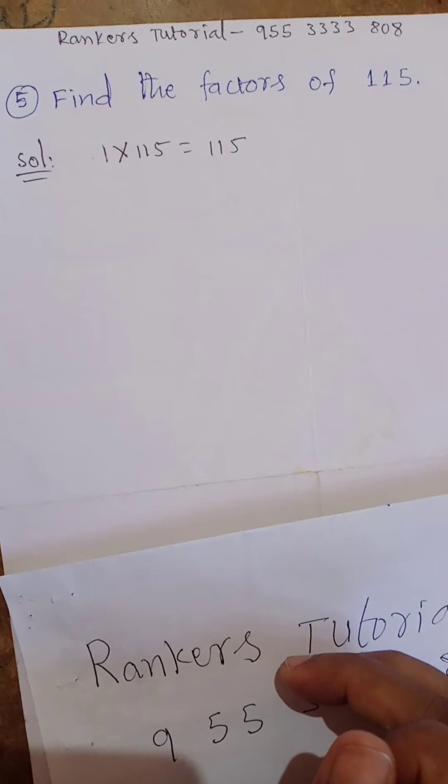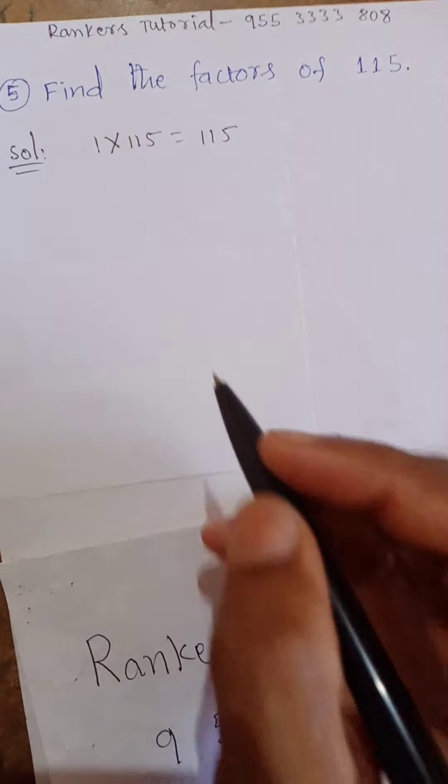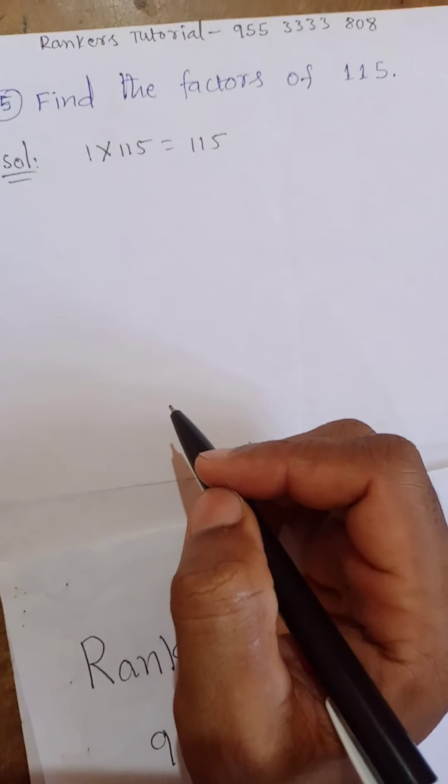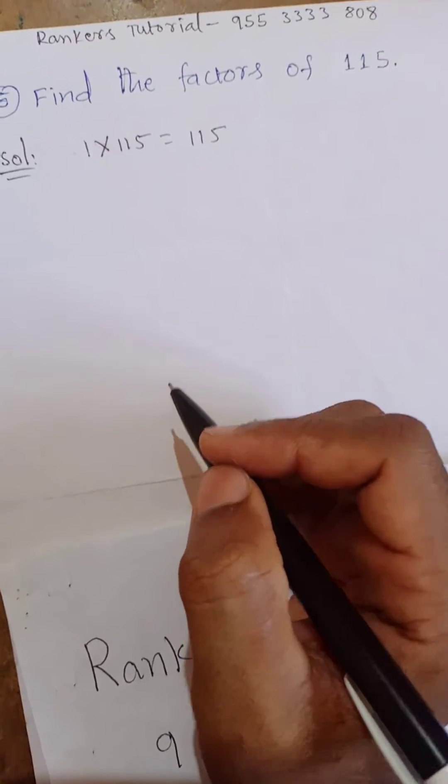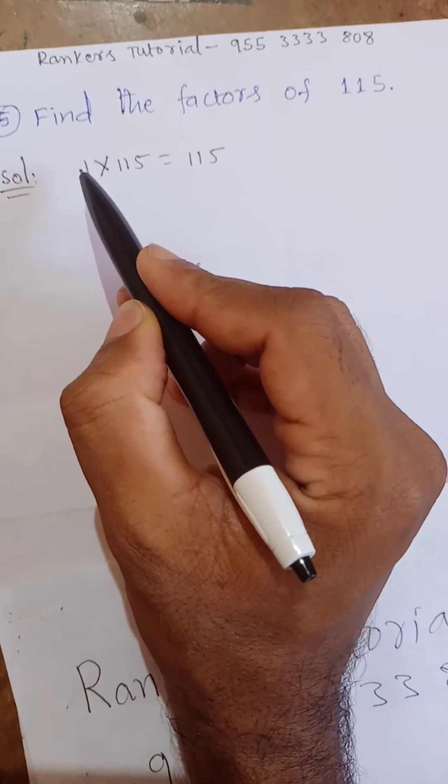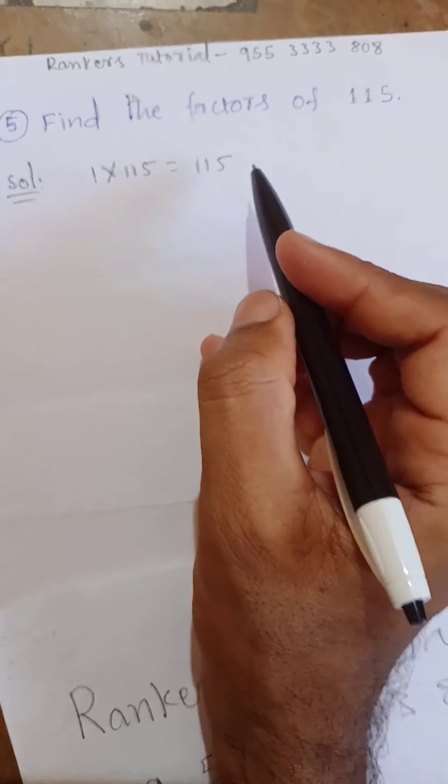Find the factors of 115. 1 is the factor of every number, so 115 will come in 1 table. 1 into 115 equals 115.